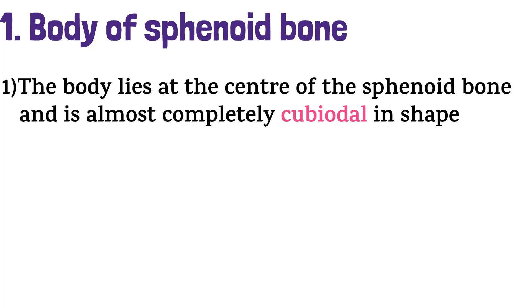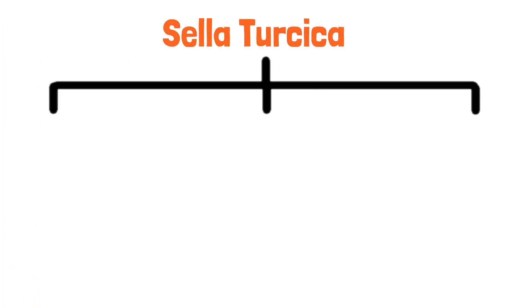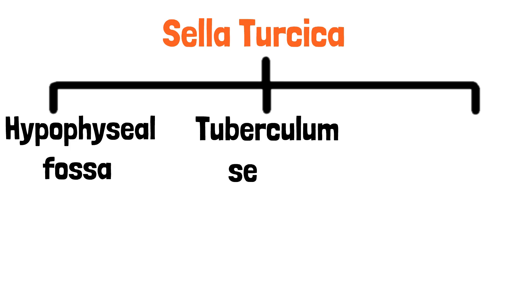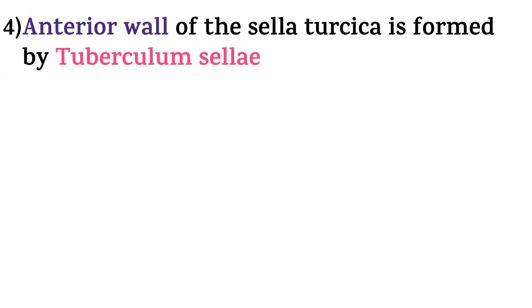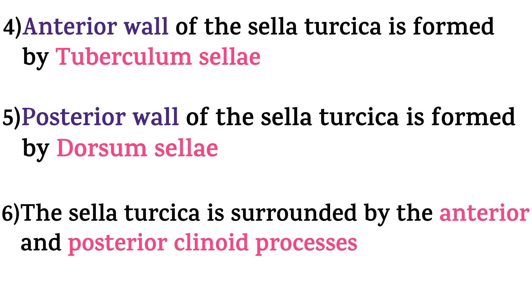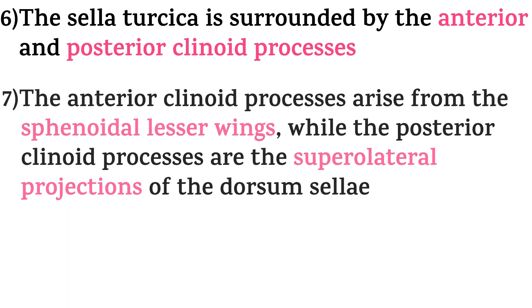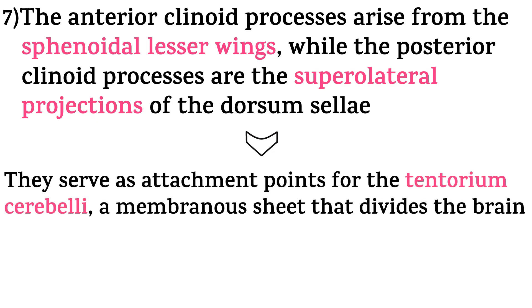Starting with the body of the sphenoid bone. The body lies at the center of the sphenoid bone and is completely cuboidal in shape. The superior surface of the body has a depression called the sella turcica. This sella turcica has 3 parts: the hypophysial fossa, tuberculum sellae, and the dorsum sellae. The deepest part of the sella turcica, where the pituitary gland is located, is called the hypophysial fossa. The anterior wall is formed by the tuberculum sellae, whereas the posterior wall is formed by the dorsum sellae. The sella turcica is surrounded by the anterior and posterior clinoid processes. The anterior clinoid processes arise from the lesser wings, while the posterior clinoid processes are the superolateral projections of the dorsum sellae. They serve as an attachment point for the tentorium cerebelli, a membranous sheet that divides the brain.